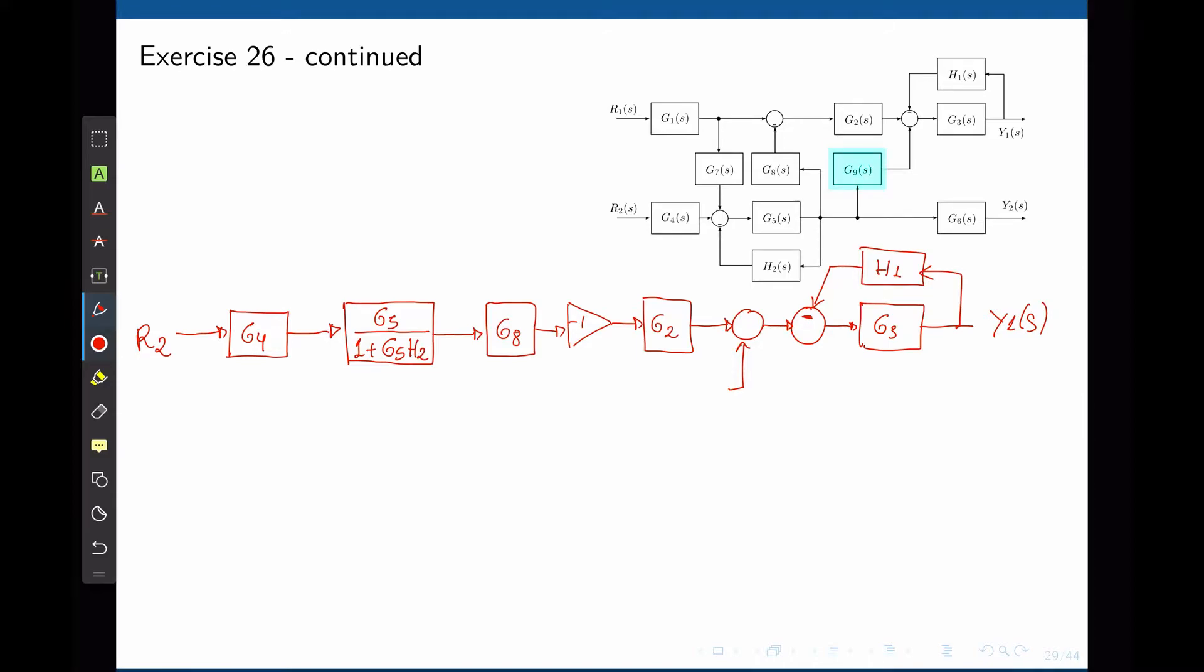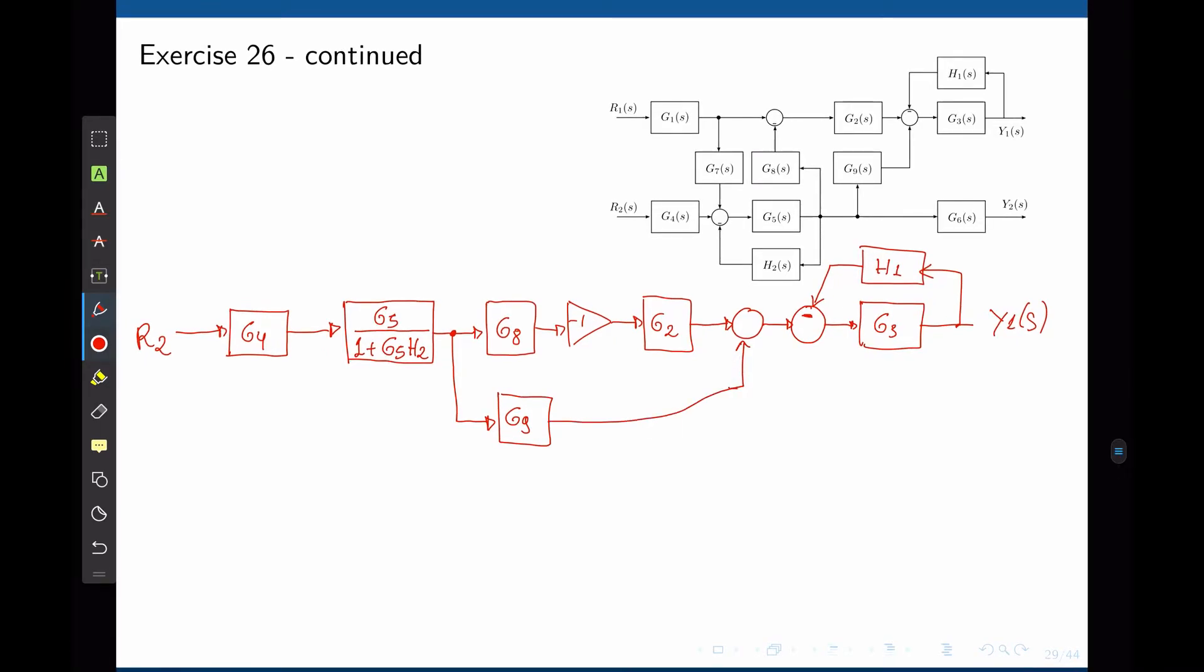In this process, we still had G9. G9 is connected in the output of G5 and H2, which we converted into this equivalent transfer function. So the output here still has the function G9, and the function G9 then feeds the sum, that triple input sum that we split into two double input sums.